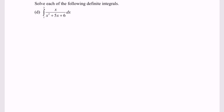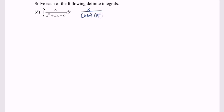So we have x over x squared plus 5x plus 6. My suggestion would be to factorize the denominator, and we will have (x plus 2)(x plus 3).